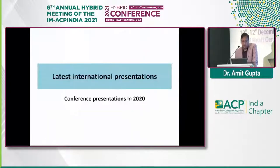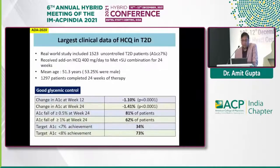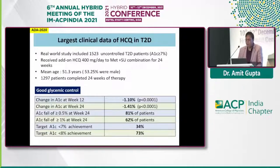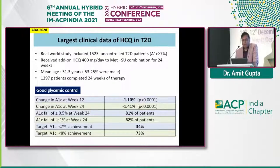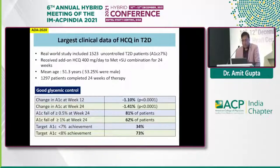The largest real-world signal data on HCQ in type 2 diabetes comes from the KBA society presentation — 1,523 uncontrolled type 2 diabetes patients receiving HCQ per kilogram per day in combination therapy over 24 weeks. Mean patient age was 51.3 years; 1,297 patients completed 24 weeks of therapy. There was good glycemic control across all parameters at weeks 12 and 24. Target HbA1c below 7 percent was achieved in 34 percent of patients and below 8 percent in over 73 percent.